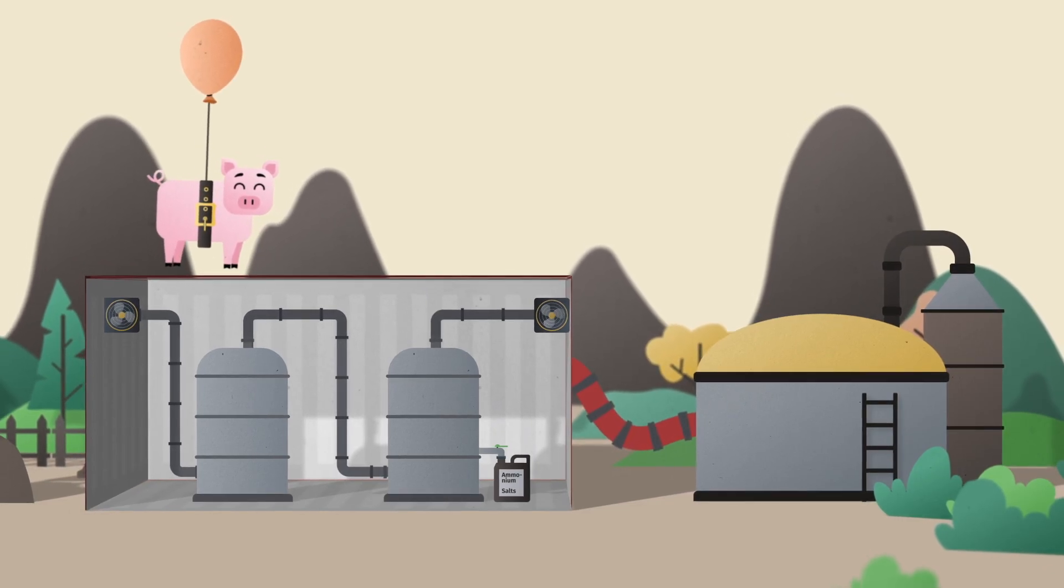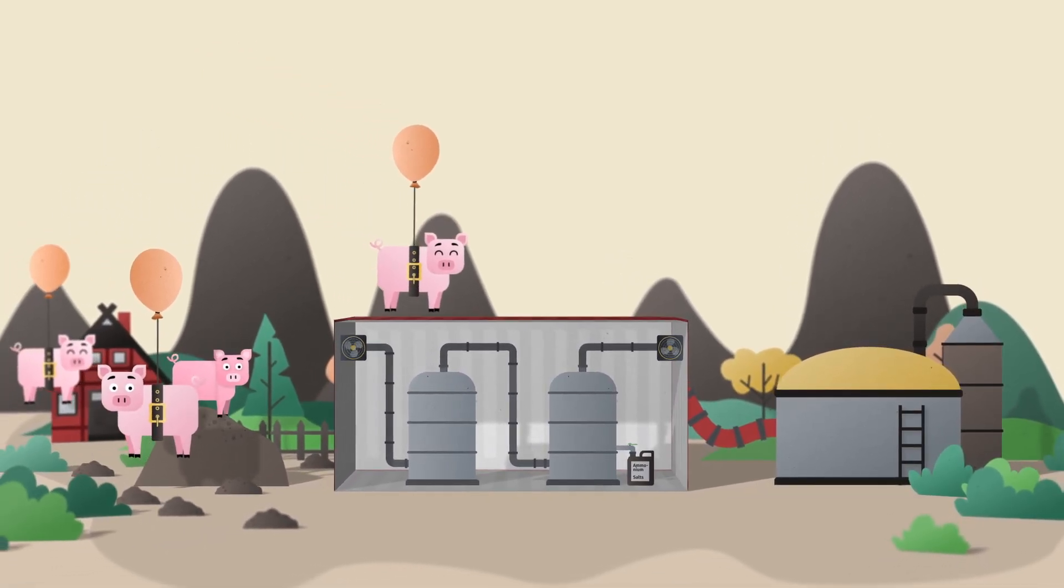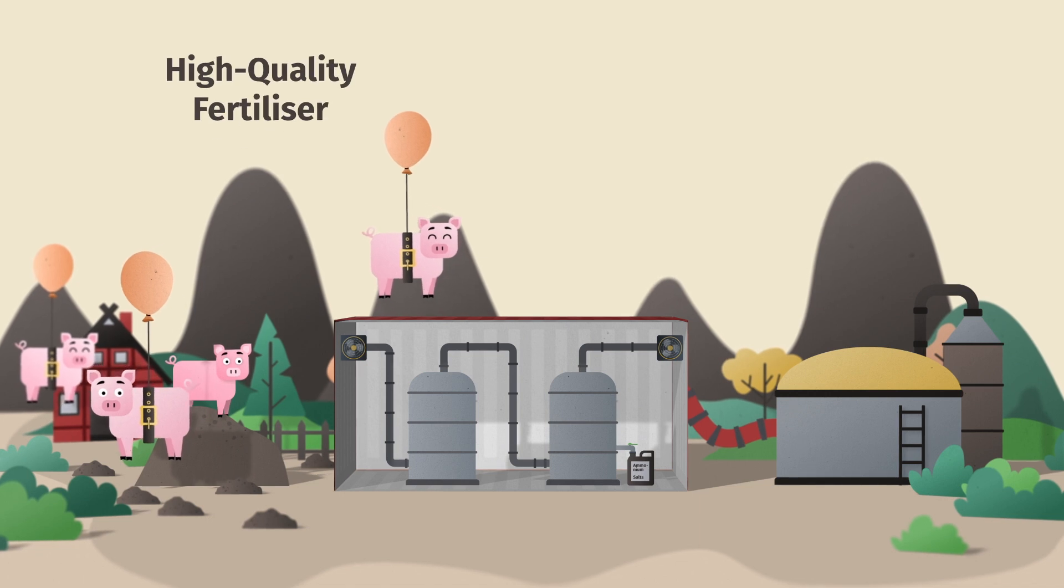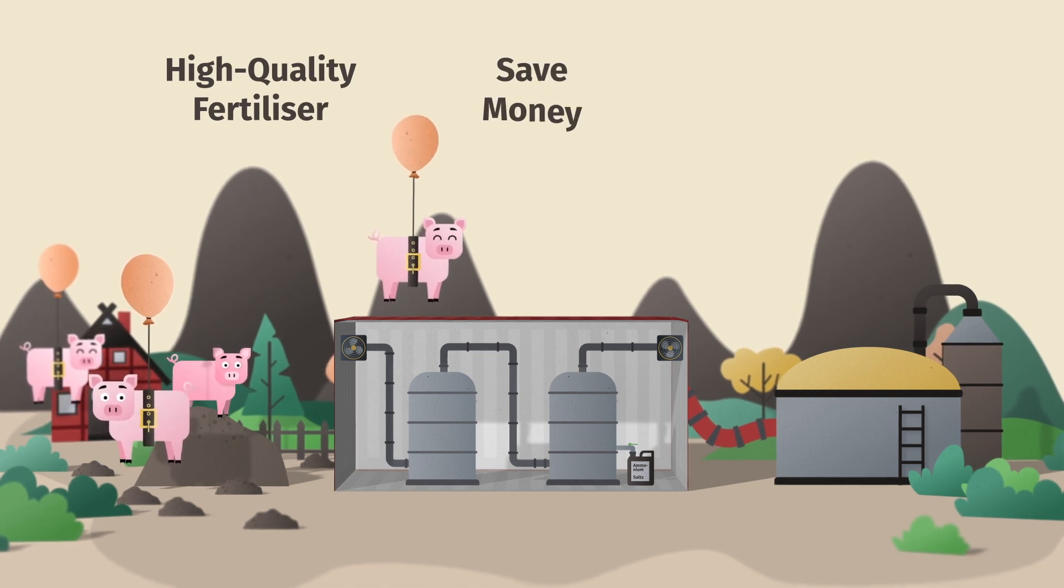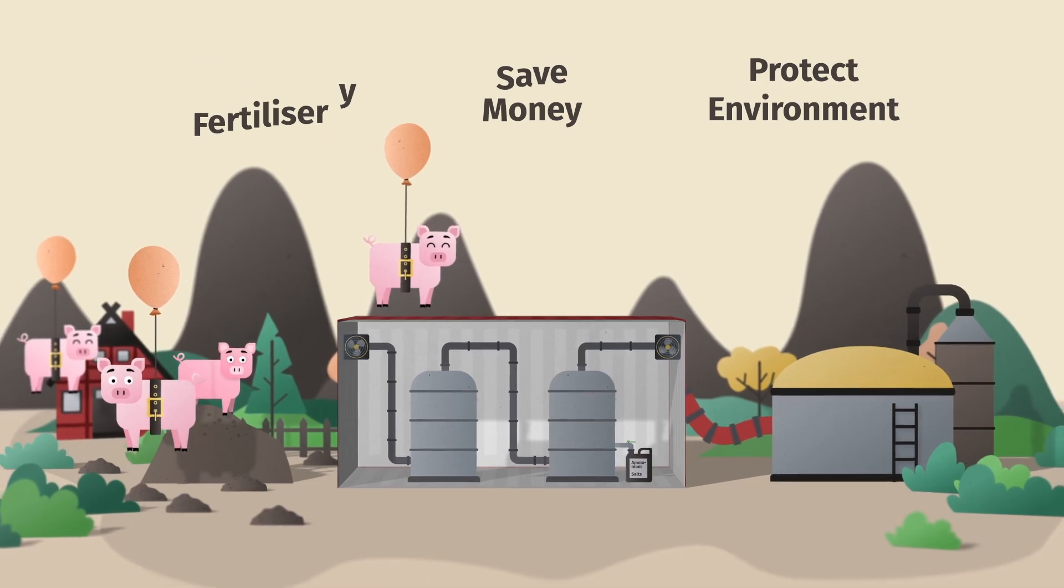The stripping-scrubbing process turns a challenge into an opportunity by converting surplus manure into high-quality fertilizer. This saves farmers money and protects the environment by preventing nitrogen pollution of water and air.